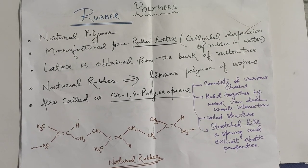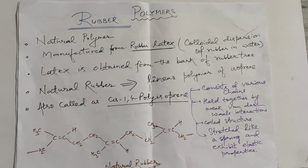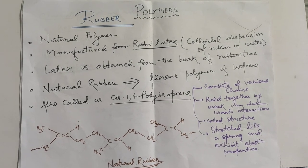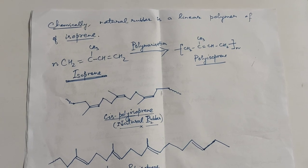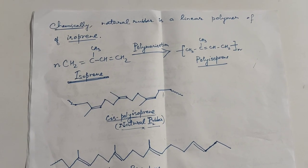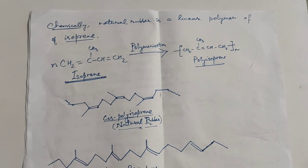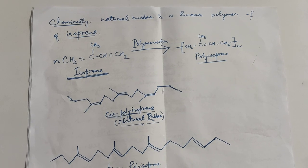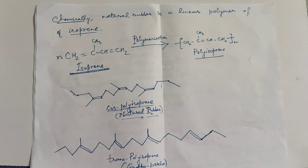The trans form of rubber is called gutta-percha rubber. When isoprene is polymerized, polyisoprene is produced. Natural rubber is cis-polyisoprene, whereas the trans-polyisoprene is called gutta-percha rubber.